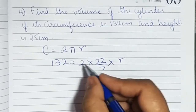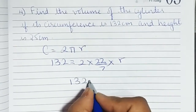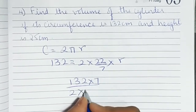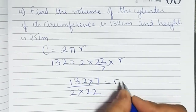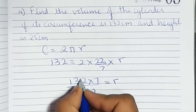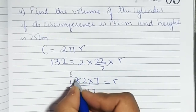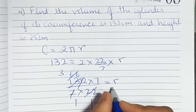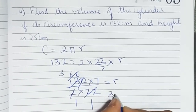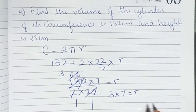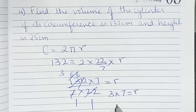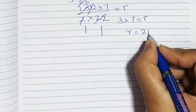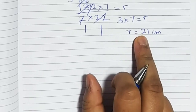Rearranging, r equals 132 into 7 upon 2 into 22. Simplifying: 132 divided by 2 is 66, and 66 divided by 22 is 3. So r equals 3 into 7, which gives r equals 21. We now have the radius, which is 21 centimeters.